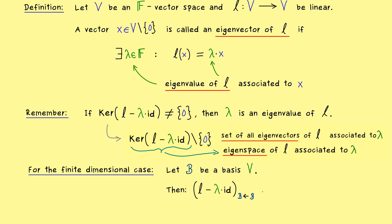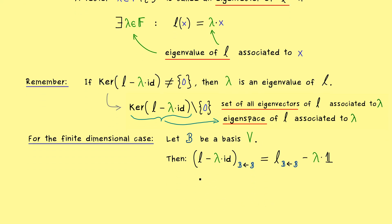And then we know that the matrix representation of L minus lambda times the identity with respect to the basis B is given by the matrix representation of L minus lambda times the identity matrix. And there we can use the fact that the dimension of the kernel does not change if we go to the corresponding matrix representation. In other words we get the following equivalence.